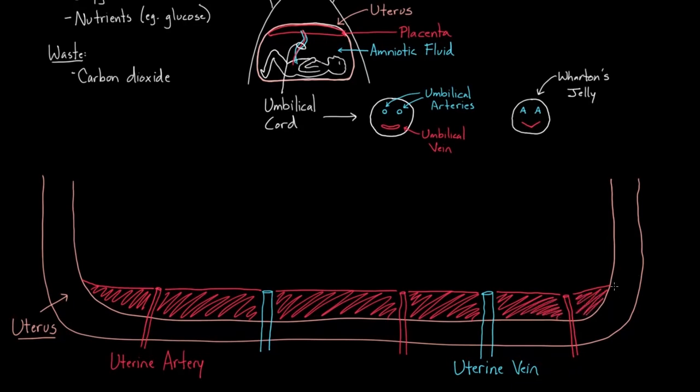And this part is known, actually let me switch colors, this part is known as the basal plate. So if you're talking about the basal plate, you're talking about this bit of tissue here with the blood vessels, the uterine arteries and the uterine veins. And just to be clear, it belongs to mom. So this is mom's cells.